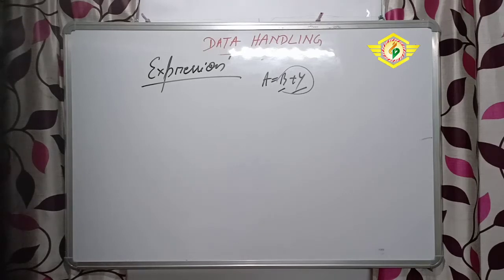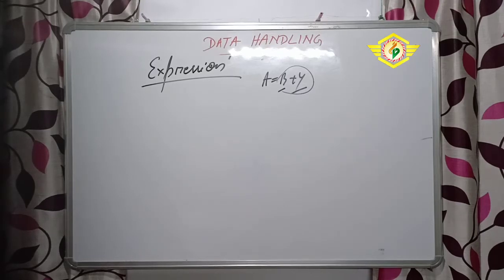In arithmetic expressions we can use complex numbers, we can use floating numbers, etc. We can use integers only. Like that relational expressions also - we can use different types of relational operators. In similar way logical expressions and string expressions also we can use. Evaluating the expression we will discuss in a different chapter.